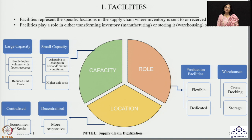Let us talk about warehouses. In warehouses, we can have two ways of functioning: cross-stocking or storage-type systems. In cross-stocking, inventory is moved without storing it for long at the warehouses, allowing lot of mix and match as per customer requirements, thereby introducing more flexibility and helping achieve supply chain responsiveness. Whereas if you have dedicated storage systems, they are suitable for larger volumes and target minimal cost, making the processes more efficient. Supply chains that are efficient in nature can have a dedicated storage system in their warehouses.